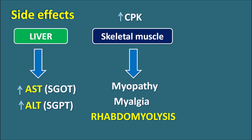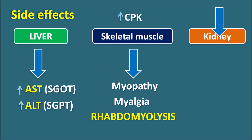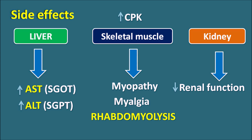Another organ affected by phenofibrate is the kidney. This drug can reduce renal functionality, thereby decreasing the glomerular filtration rate. That's why phenofibrate may result in increased serum creatinine levels, which indicates that renal damage may be produced by phenofibrate.